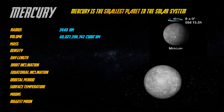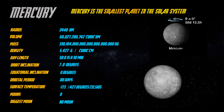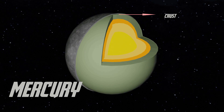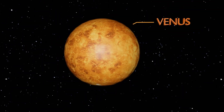Mercury has the most craters due to no factor for erosion. Mercury has the shortest year. It has no moon and has mainly four layers.